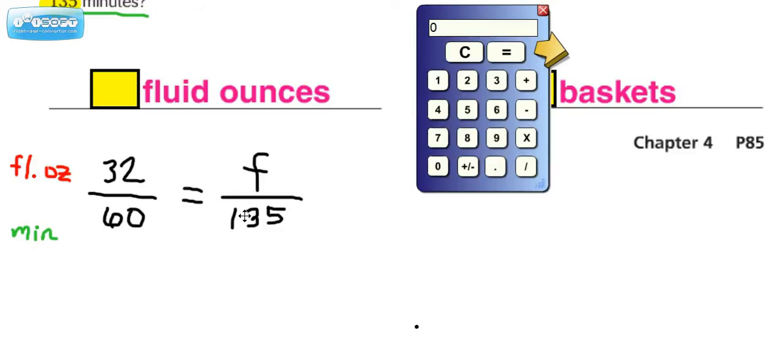So if we do our cross products, let's take this number and multiply it by this number: 135 times 32. And the number we get is this number right here. And then, of course, that's going to equal 60F, because that's the other cross product right here.